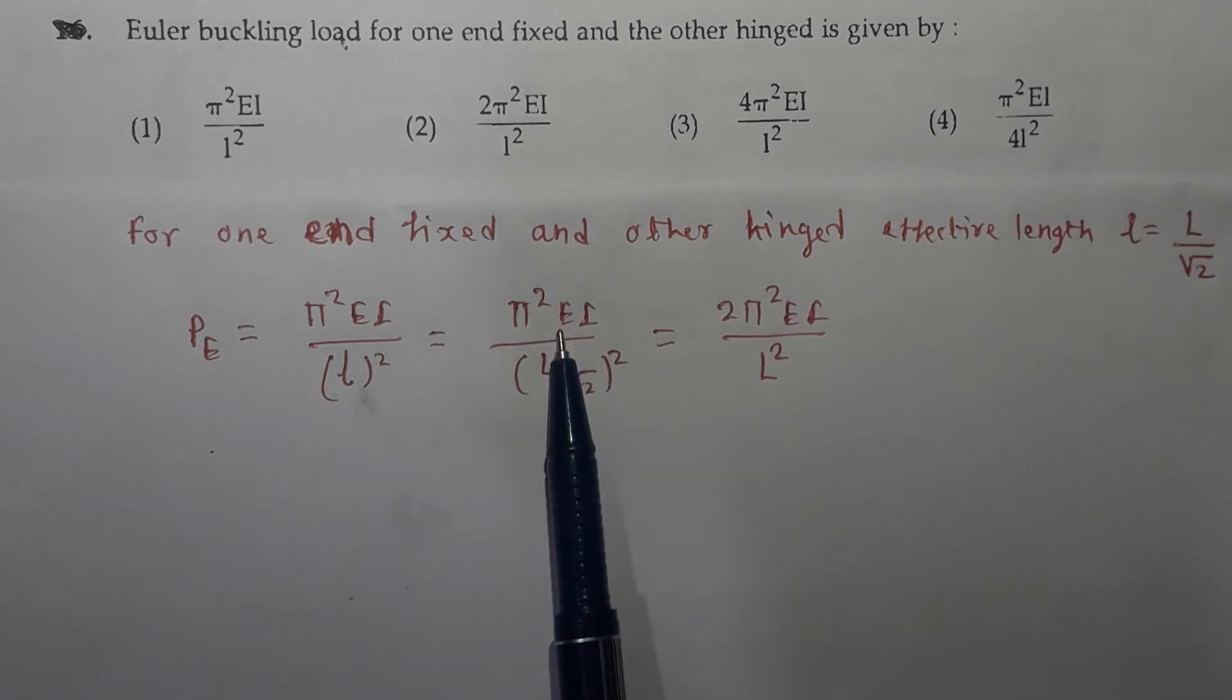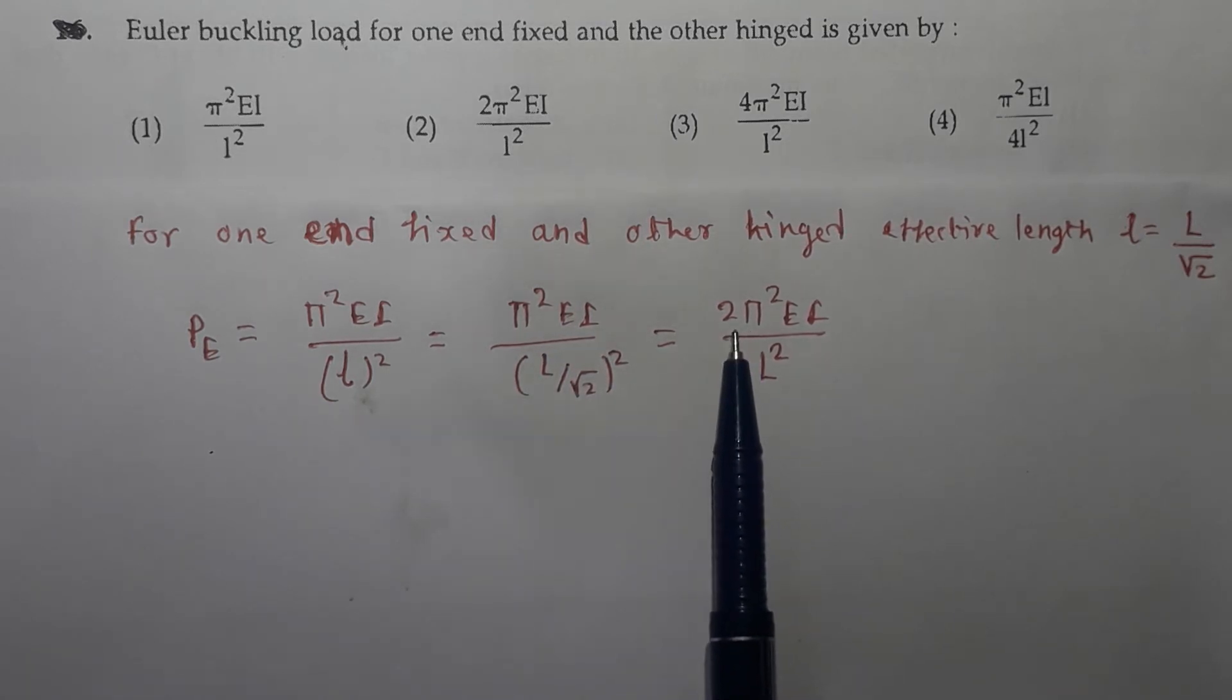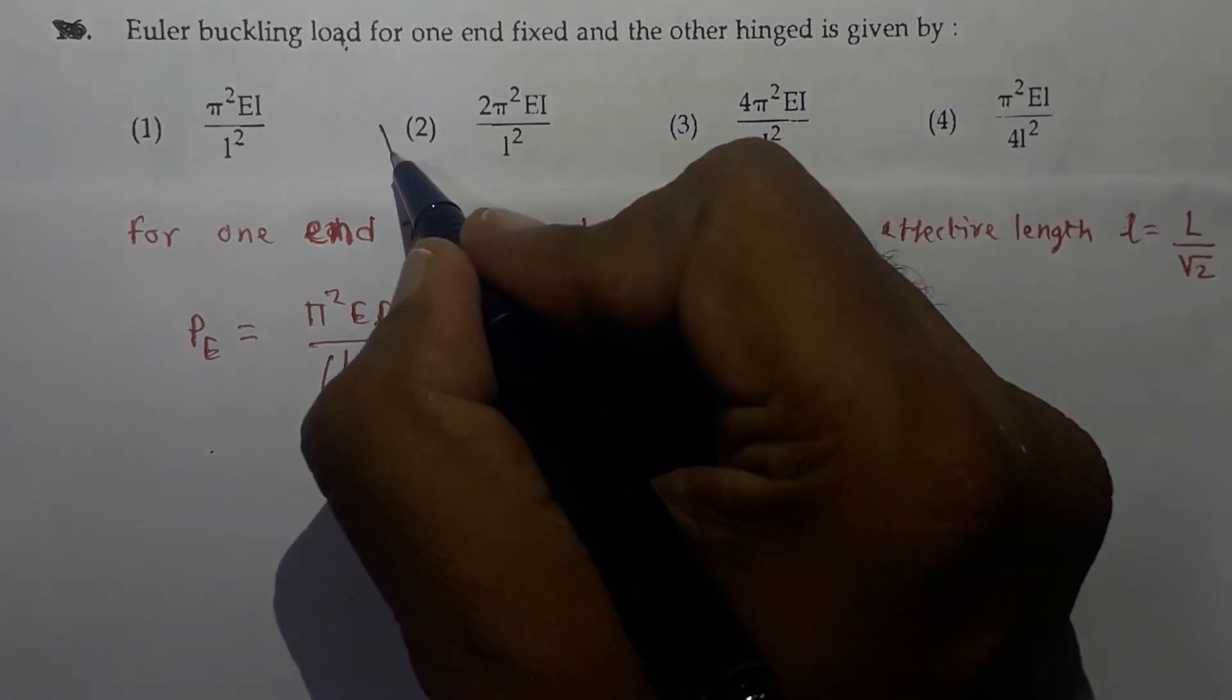The numerator is remaining as it is. So root 2 square, it will be 2. So this 2 will go to the numerator and the formula will be 2 pi square EI upon L square. Option 2 is the correct option.